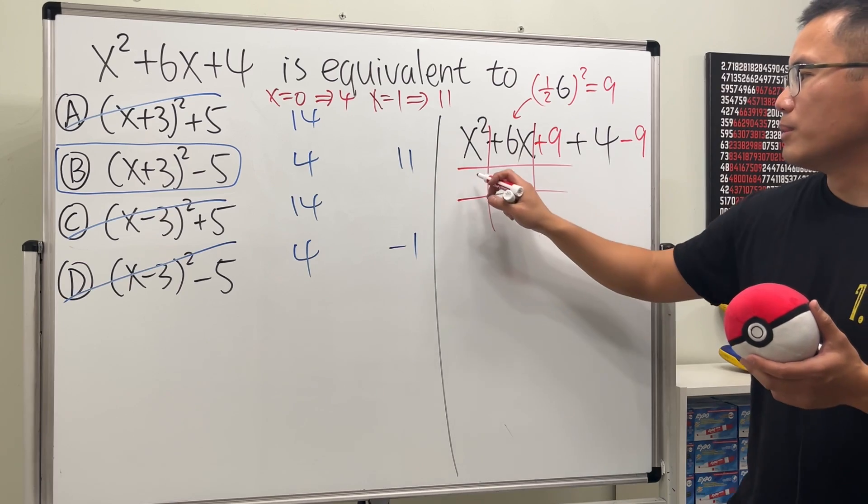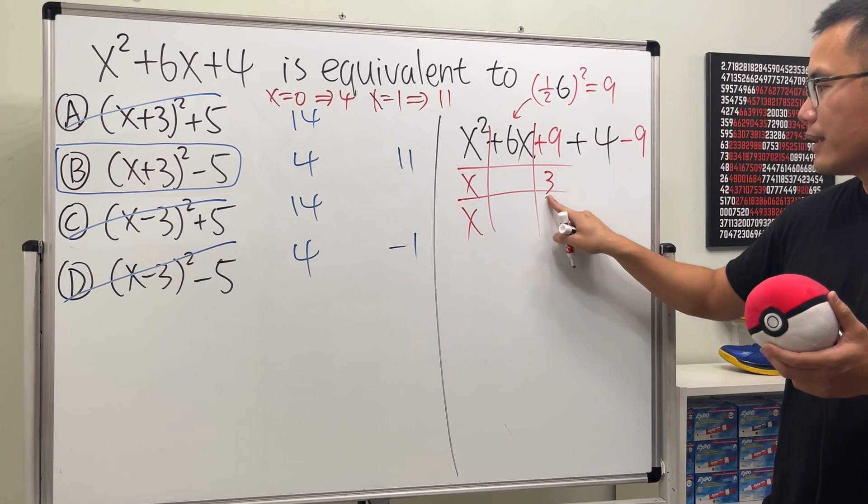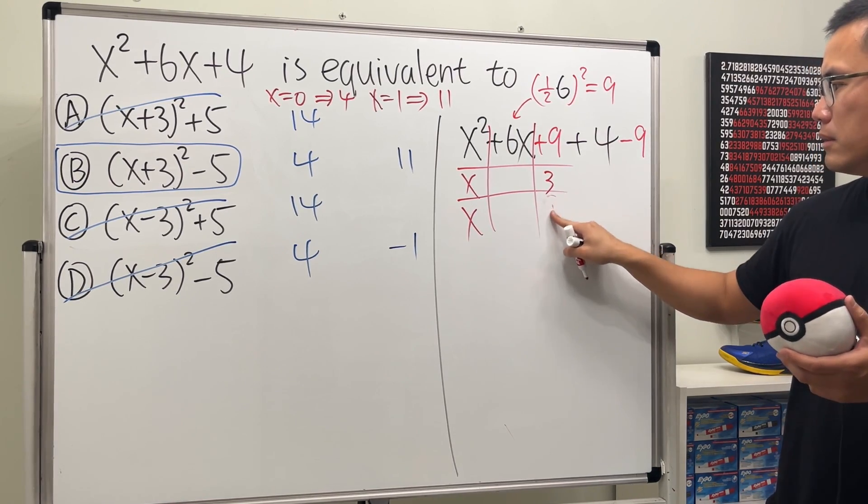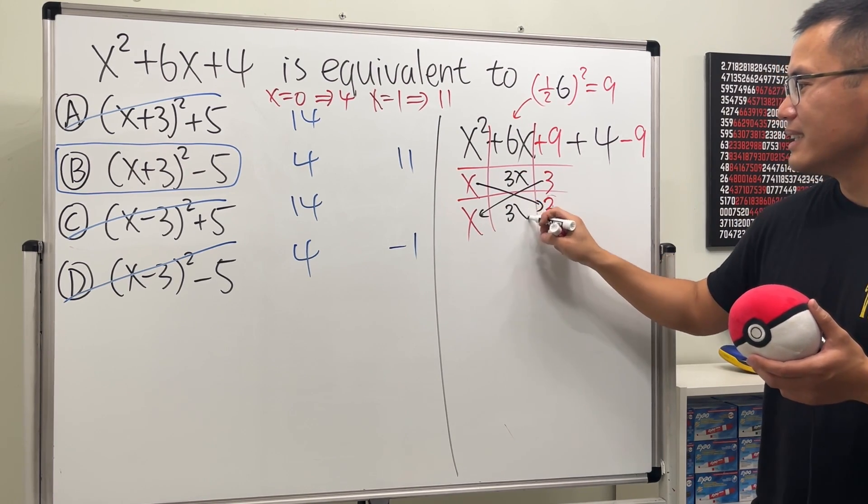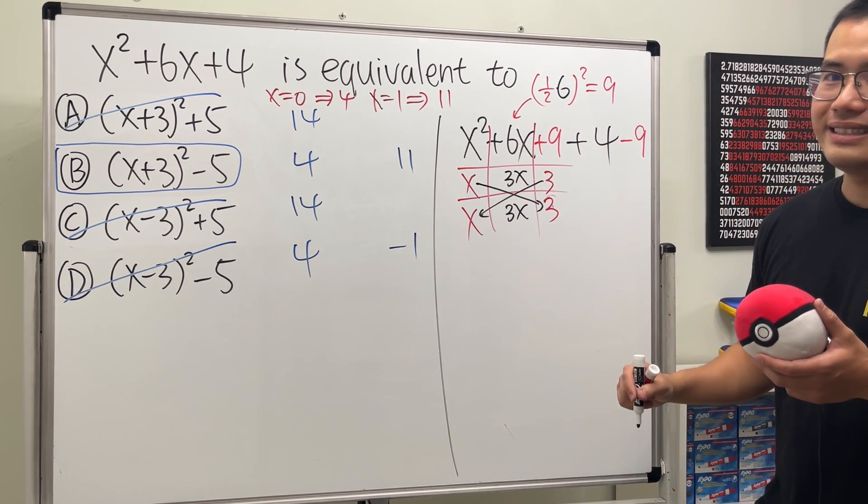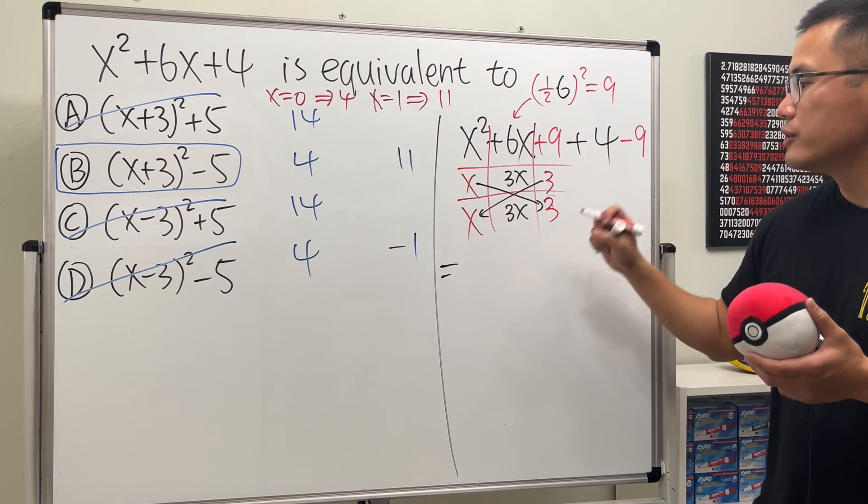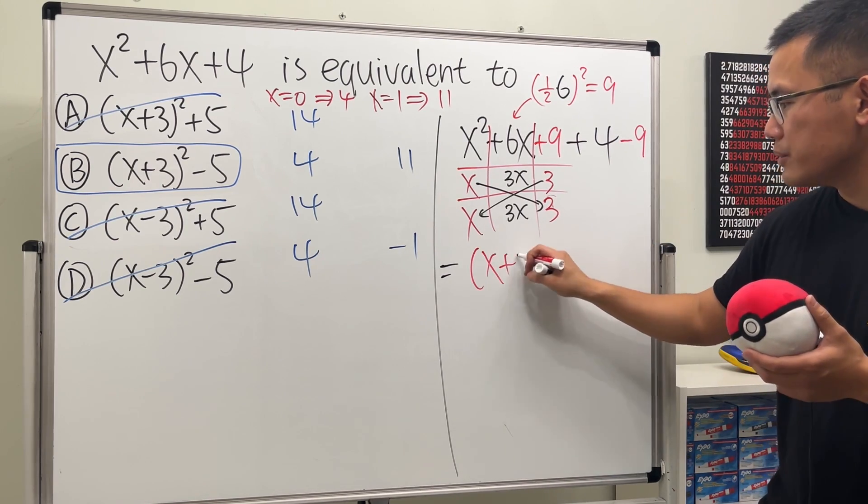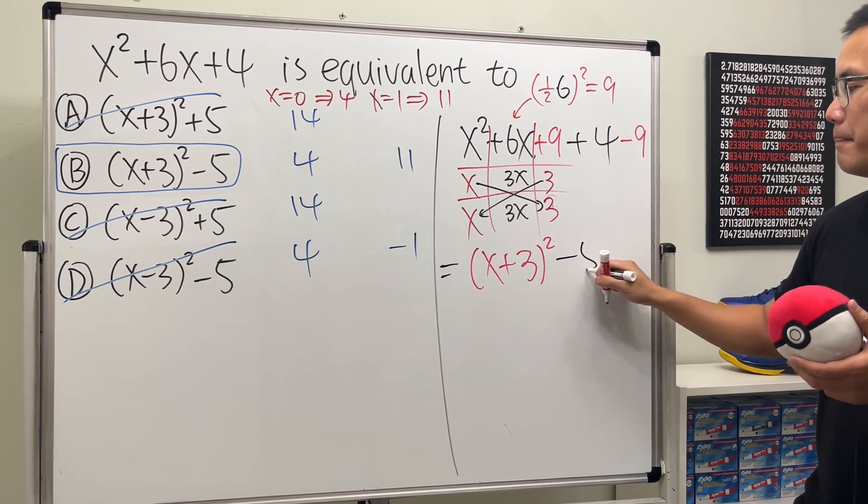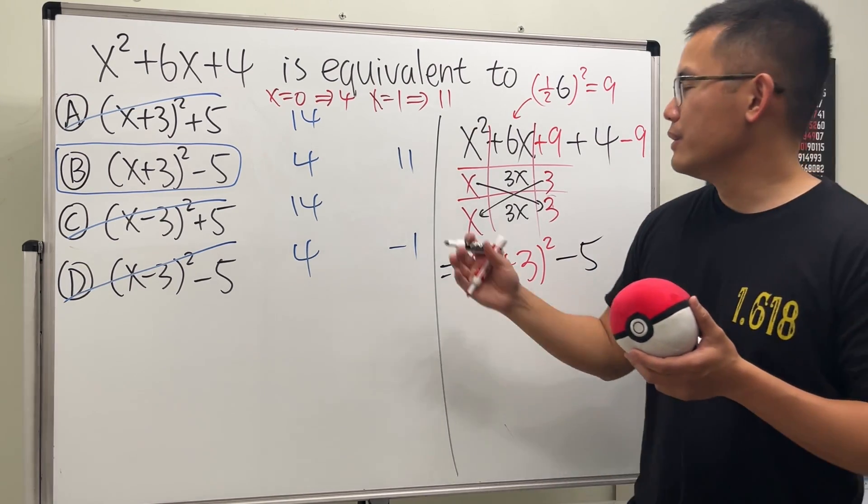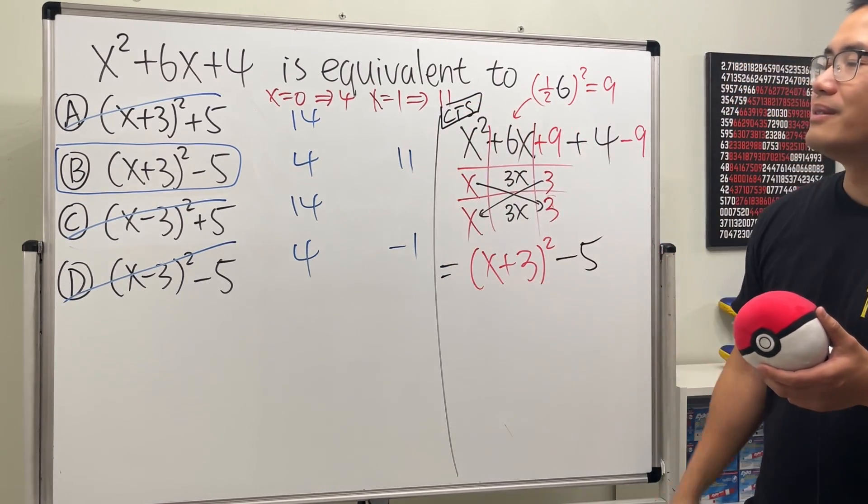And let me just impress you guys with the tic-tac-toe method. This is so cool. I love it so much. Because you see, x times x will give us x squared. And then 3 times 3 will give us the 9. So that's good. And then, x times 3 is 3x. And then 3 times x is 3x. Together, we do end up with the 6x. The factors are x plus 3 times x plus 3. So we do get x plus 3. And then square. And then 4 minus 9, we have the minus 5. So this right here is the CTS completing the square method.